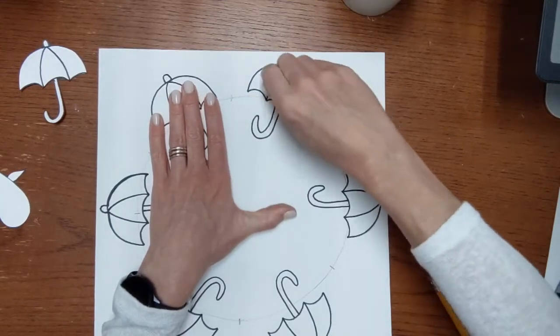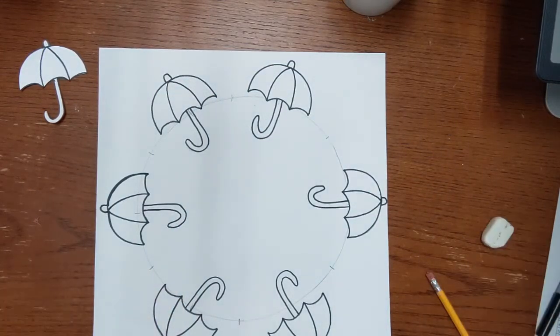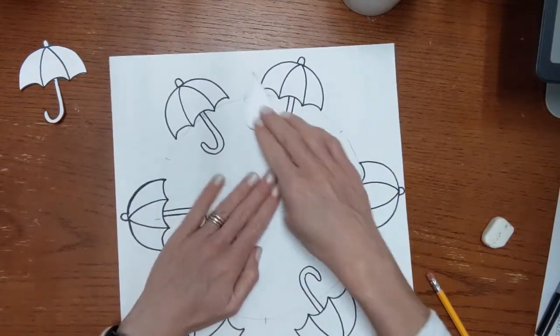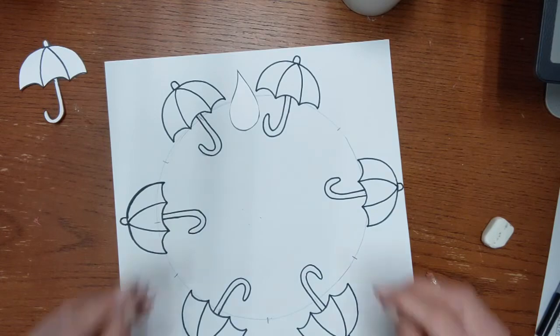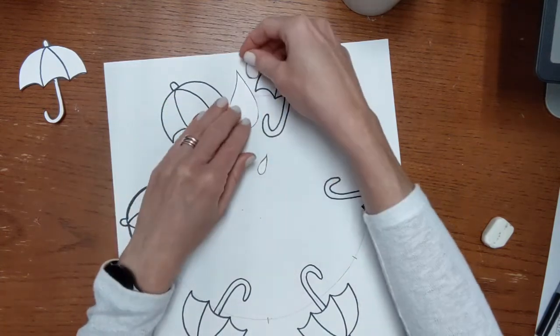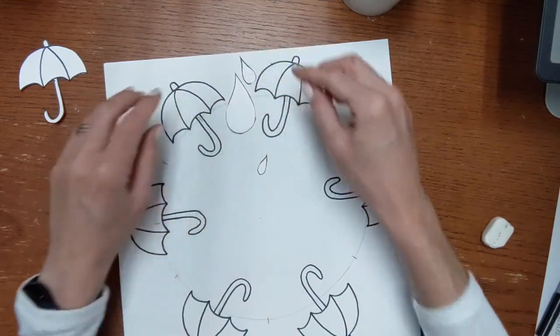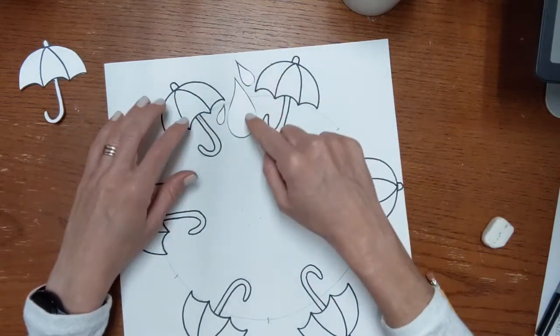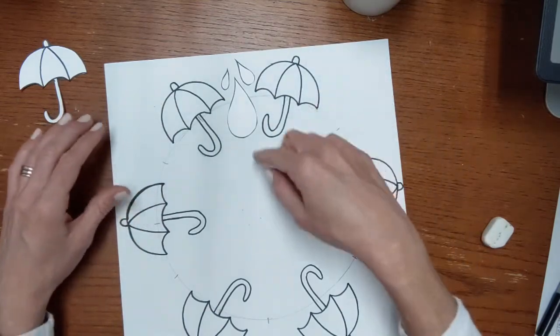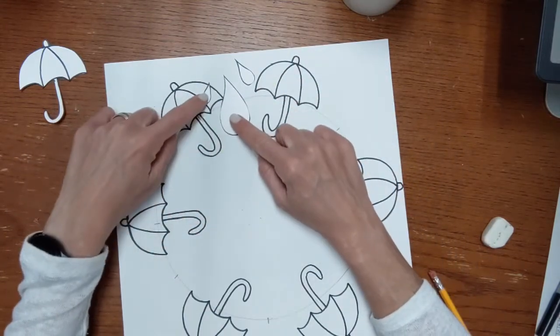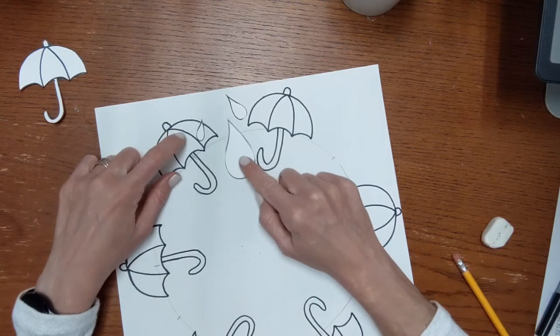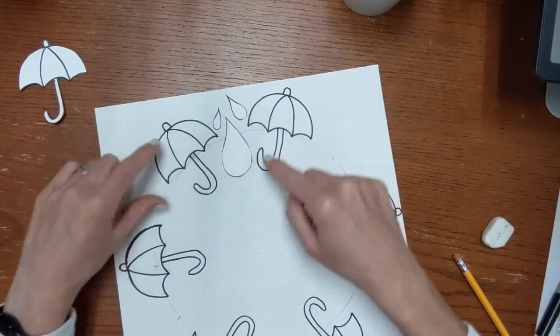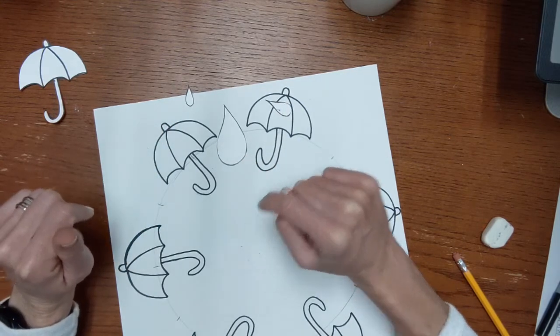So you may have guessed already that you're going to be using your next template, whatever it is that you created, in the in-between shape. So I could use just one of my little water droplets, I could use all three. Maybe sometimes I just use one and maybe sometimes I use two, maybe sometimes I do use all three. I could also arrange them all the same way every time or I could kind of change how I'm arranging them. I don't want them to cross over onto my umbrellas at all. I want them to have their own space.